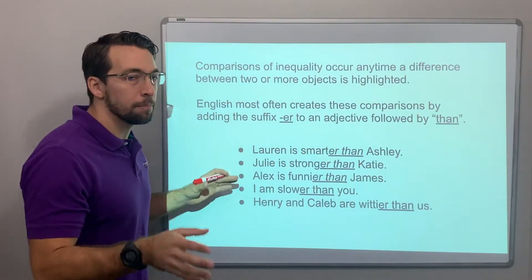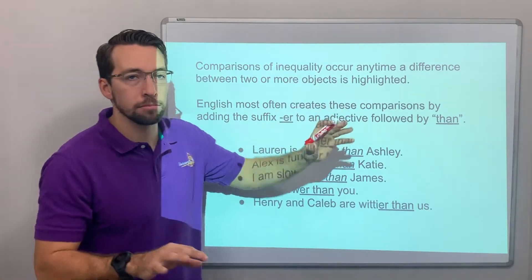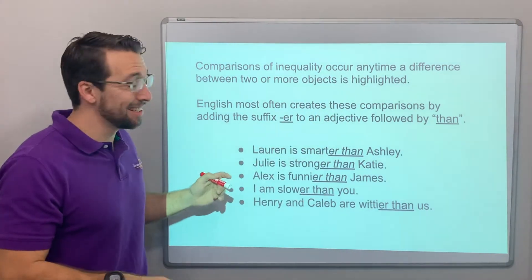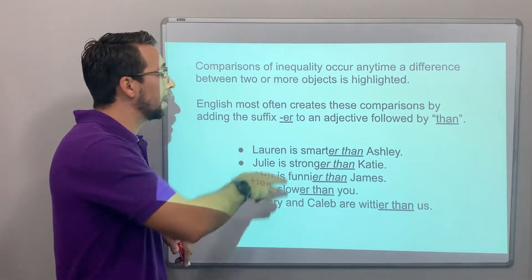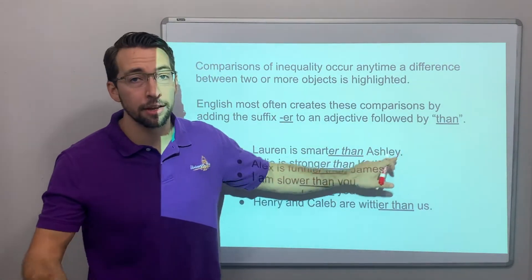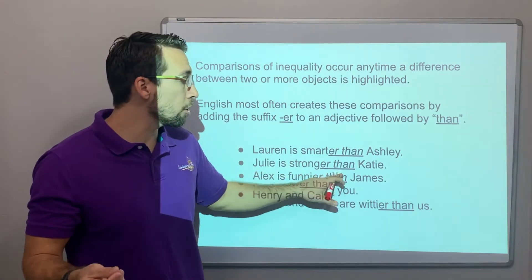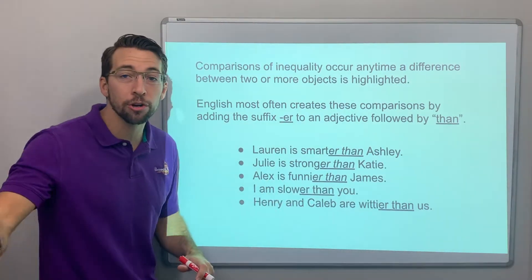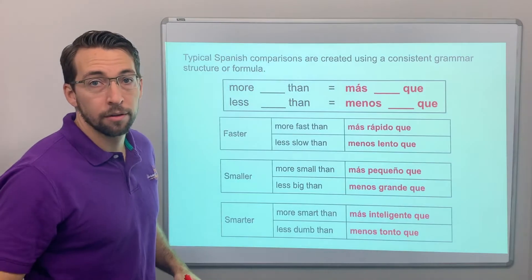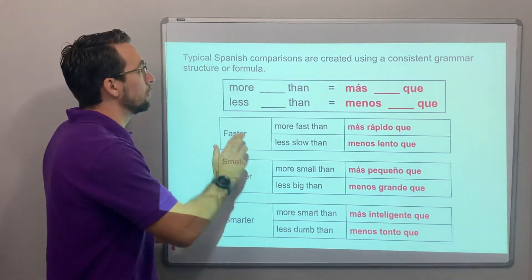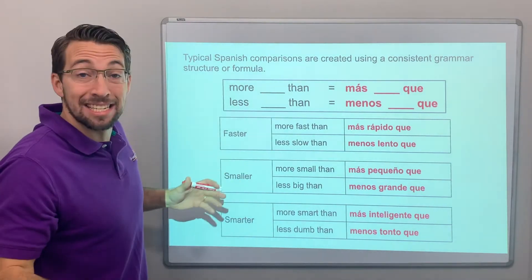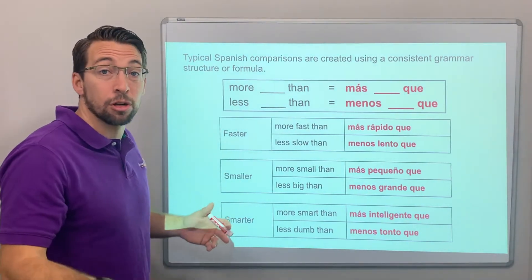As a review, comparisons of inequality occur anytime a difference between two or more objects is highlighted. Usually in English we say 'er than.' So Lauren is smarter than Ashley, Julie is stronger than Katie, funnier than James, or slower than you. Typical Spanish comparisons are created using a consistent grammar structure or formula.